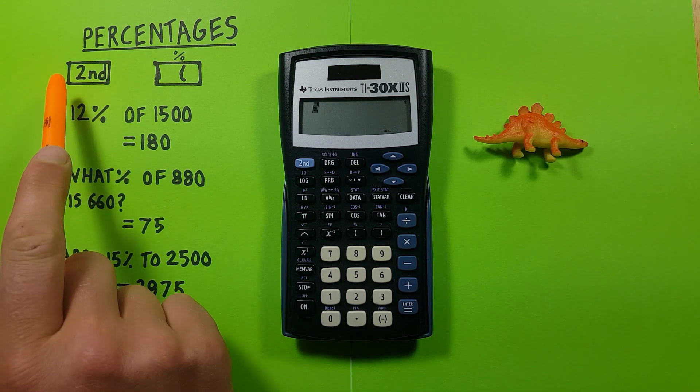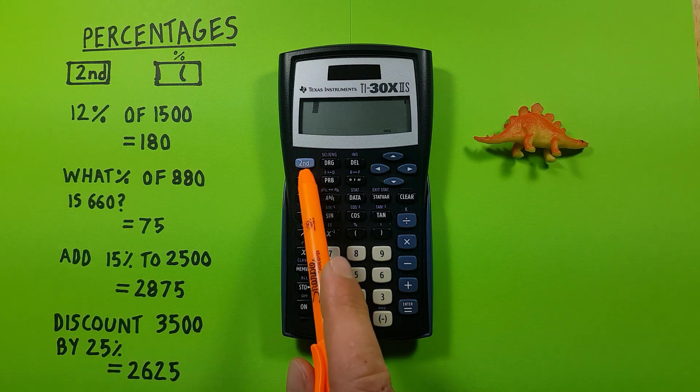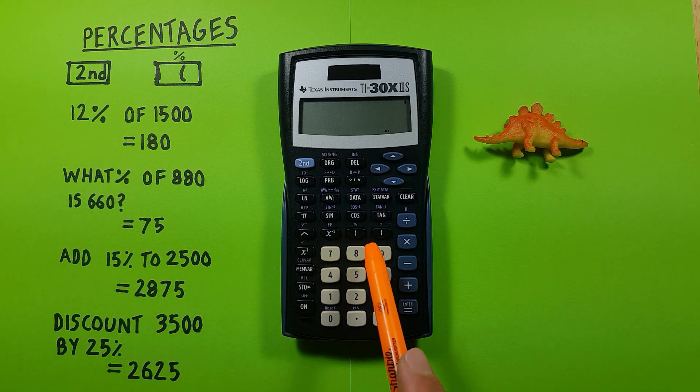To do this we'll be needing to use the second function key, it looks like this, in the top left corner here, as well as the left bracket, located down here, which has a second function of percentage.